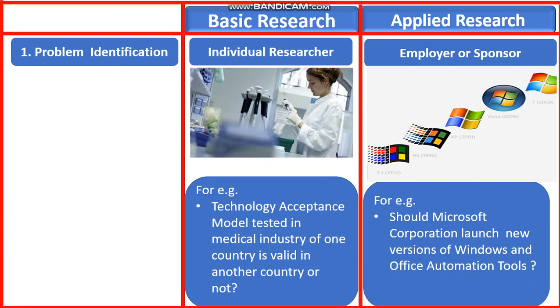In nutshell, we can say that problem identification in basic research is done by the individual researcher, whereas the problem identification in applied research is done by the employer or the sponsor.